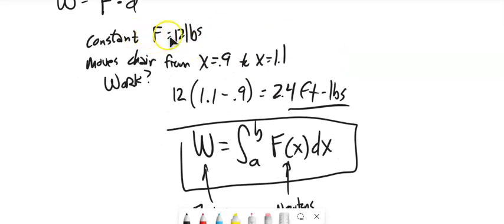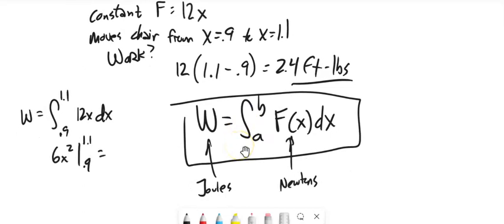Instead of constant force of 12 pounds, let's say F = 12x, where the force increases as you're moving the chair. The work would be ∫₀.₉¹·¹ 12x dx. What's interesting is there's some symmetry - we actually get 2.4 again. But if we moved it further to 1.5, we get 8.64, whereas with constant force we'd get 7.2.